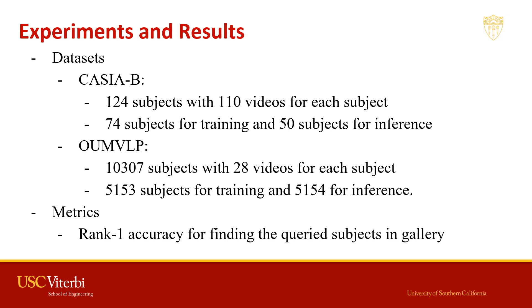We apply our methods on two public gait recognition datasets: CASIA-B and OUMVLP. CASIA-B has 124 subjects with 10 videos for each subject. For OUMVLP, we have around 10,000 subjects with 28 videos per subject. For evaluation, we use rank-1 accuracy for finding the query subject in the gallery as our metric for both datasets.